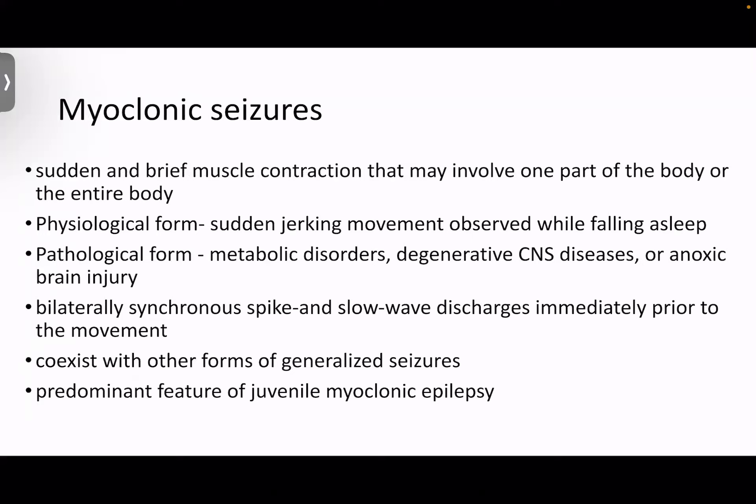Atonic seizures may be associated with epilepsy syndromes like Lennox-Gastaut syndrome. Myoclonic seizures involve sudden, brief muscle contractions that may involve one part of the body or the entire body. There are physiological forms — such as sudden jerking movements observed while falling asleep — and pathological forms associated with metabolic disorders, degenerative CNS disease, or anoxic brain injury. The EEG shows bilaterally synchronous spike-and-slow-wave discharges immediately prior to the movement. Myoclonic seizures can coexist with other forms of generalized epilepsy, and are the predominant feature of juvenile myoclonic epilepsy.